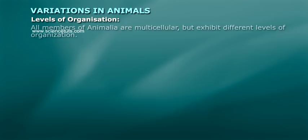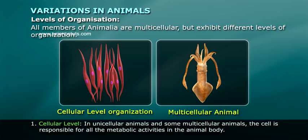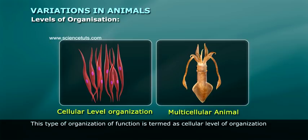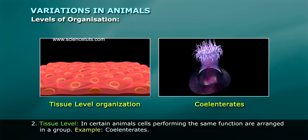All members of Animalia are multicellular but exhibit different levels of organization. At the cellular level, in unicellular animals and some multicellular animals, the cell is responsible for all metabolic activities in the animal body. This type of organization is termed the cellular level of organization.